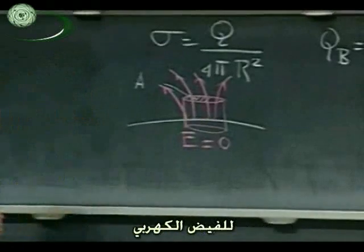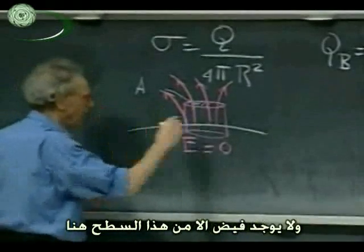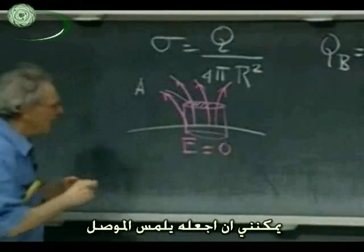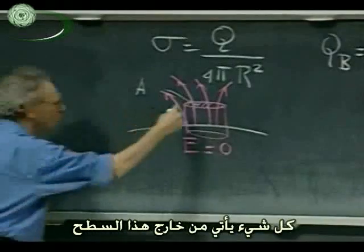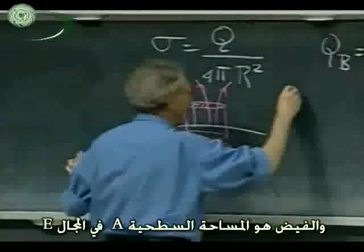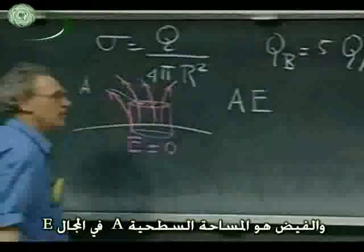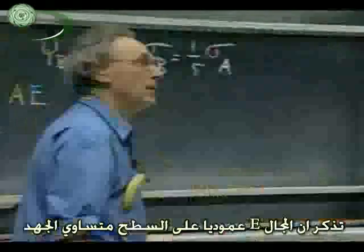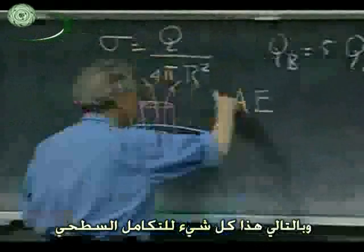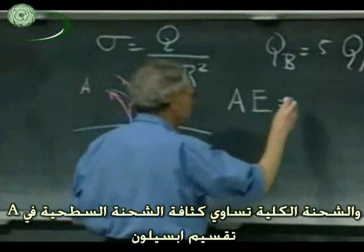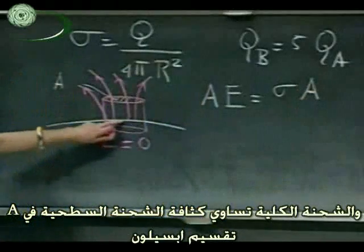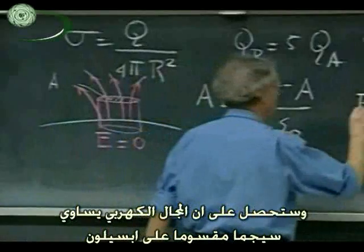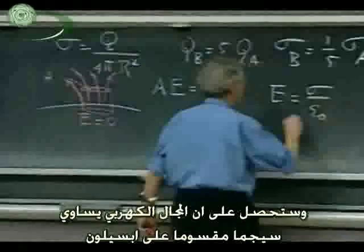There is only flux coming out of this top surface. I can bring that surface as close to the conductor as I want. So everything comes out only through this surface, giving surface area A times electric field E. A and E are in the same direction because E is perpendicular to the surface of the equipotential. This equals all the charge inside, which is the surface charge density σ times area A divided by ε₀. This is Gauss's law, and you find immediately that the electric field E equals σ divided by ε₀. Whenever you have a conductor and know the local surface charge density, you know the local electric field.